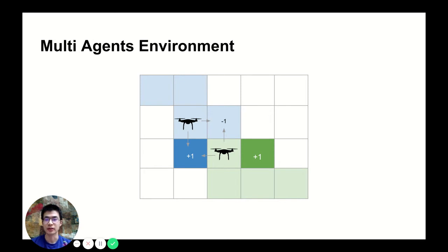We set up a multi-agent environment. We ask the two drones to move together and when they visit a new grid, it gets a positive reward. Otherwise, it gets a negative reward.